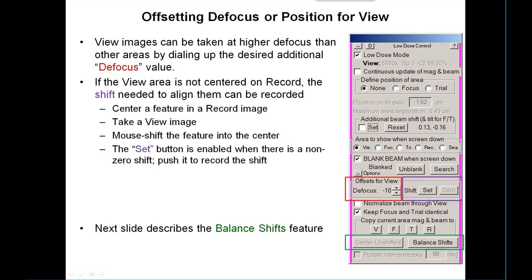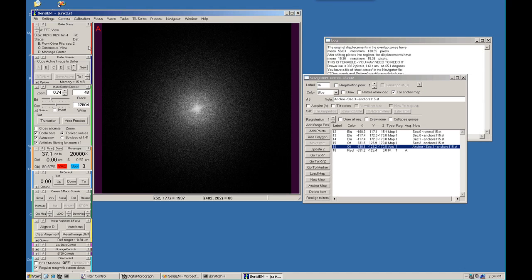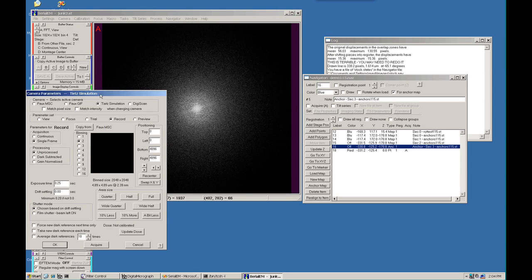There are a couple more shifting options. One is the ability to offset the defocus for view images, which is handy for getting higher contrast images than the standard defocus you're working at. The other kind of offset is a shift if the view area is not well centered on the record — there is an ability to align these images better.